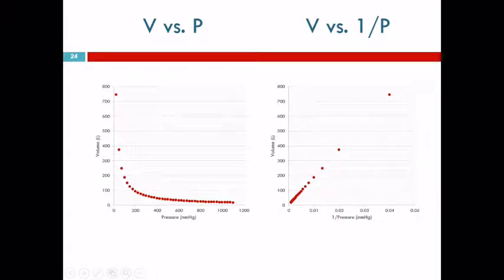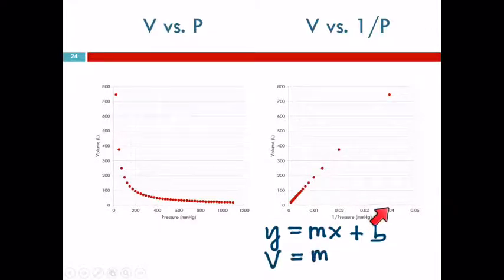So if you remember y equals mx plus b, that's the equation for a line. So in this situation, y is the volume. Volume equals the slope, which is some constant, times x. x is one over P. And the intercept was zero. So the volume is proportional to one over the pressure.